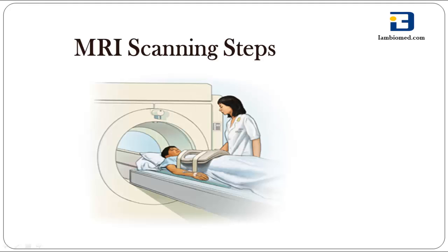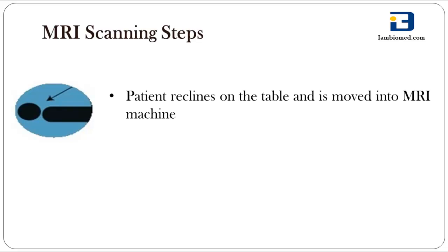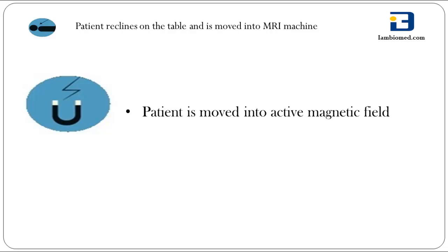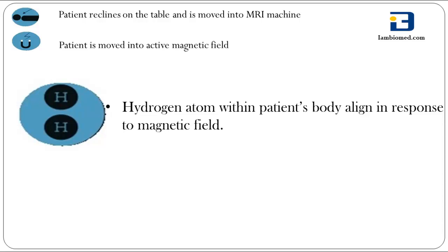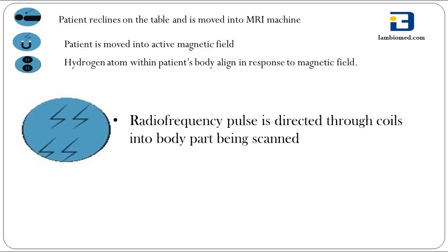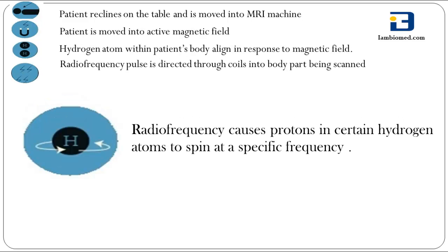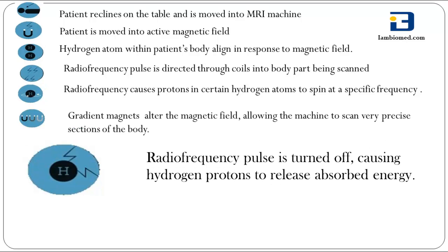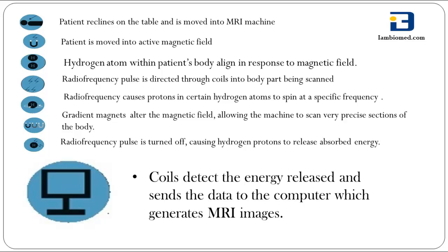Now let us discuss the MRI scanning steps. First, the patient reclines on the table and is moved into the MRI machine. The patient is then moved into the active magnetic field. The hydrogen atoms within the patient's body align in response to this magnetic field. A radio frequency pulse is then directed through the coils into the body part being scanned. This causes the protons in certain hydrogen atoms to spin at a specific frequency. The gradient magnets then alter the magnetic field, allowing the machine to scan very precisely the sections of the body. The radio frequency pulse is then turned off, causing the hydrogen protons to release the absorbed energy. The coils detect the energy released and send the data to the computer, which generates the MRI images.